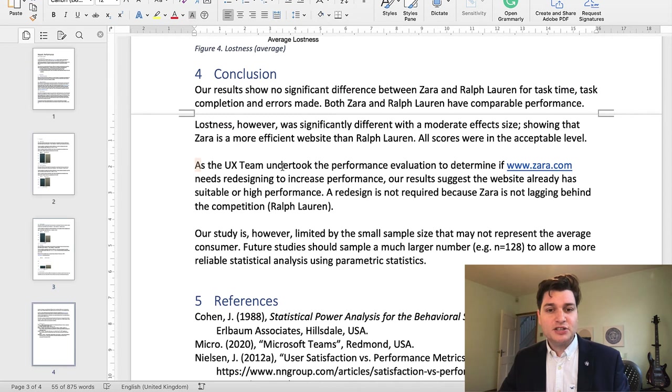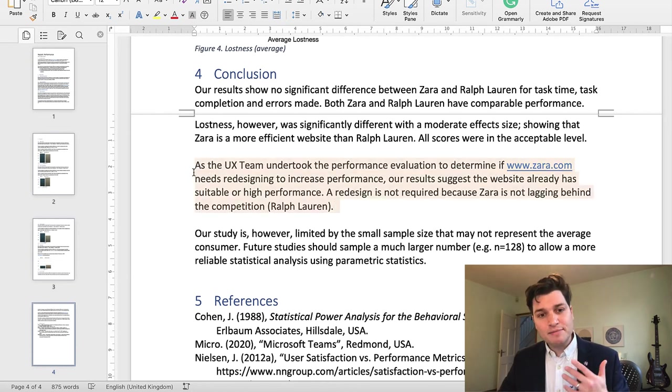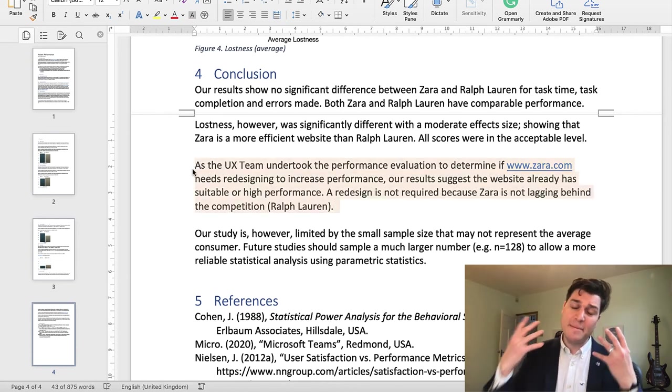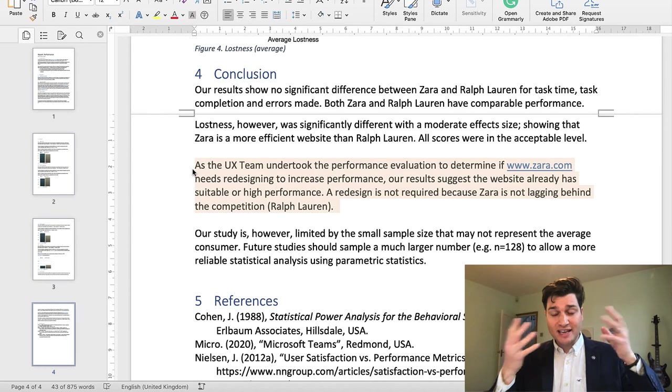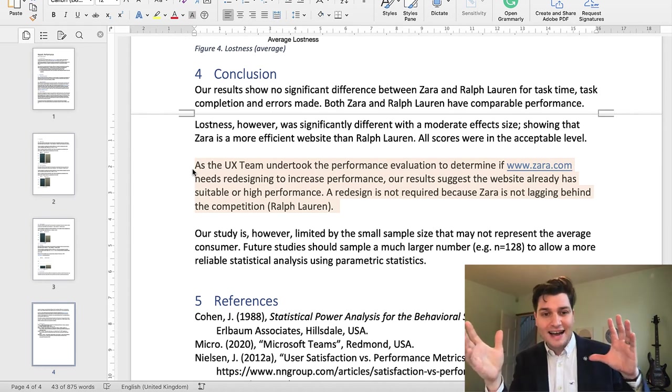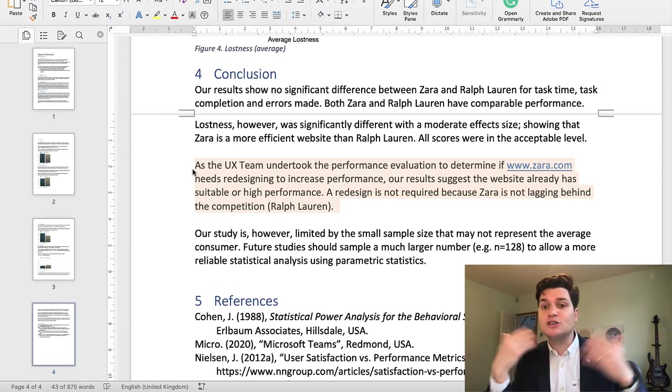As the UX team undertook the performance evaluation to determine if Zara.com needs redesigning to increase performance, our results suggest the website already has suitable or high performance. A redesign is not required because Zara is not lagging behind the competition, Ralph Lauren. So I'm now interpreting the results. What does this really mean to the reader? The reader cares about that big problem at the start. Is Zara a good performance? Does it need redesigning? Are we as good as our competitor? There you are. Simple.